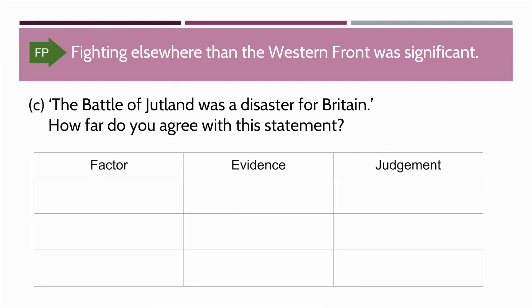For the Battle of Jutland, I came up with three factors. The first factor is casualties and ship losses. The second is the control of the North Sea. And then third, aftermath. For each factor there is evidence, and then a judgment — essentially a score of: was it good, was it bad, or did it fall in the middle?